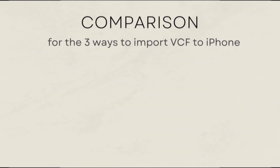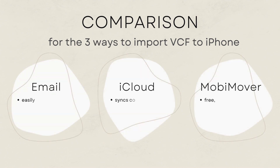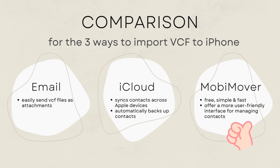Now that we've covered all three methods, let's compare them. Using iCloud and email are decent options, especially if you're looking for a quick fix without any third-party software. However, they might not always be the fastest or most reliable methods, especially if you have a large VCF file or multiple accounts. That's where EaseUS MobiMover shines — it's not only faster, but also provides more control over the data you are transferring. I highly recommend giving EaseUS MobiMover a try for a hassle-free experience.